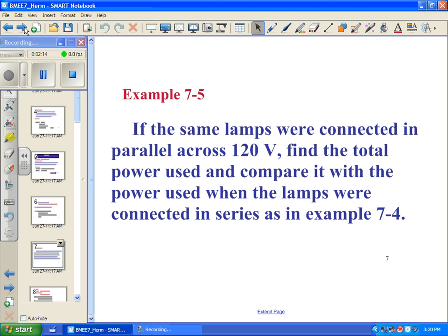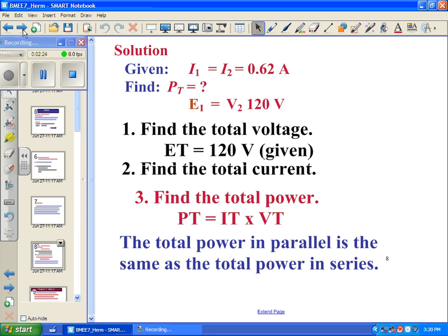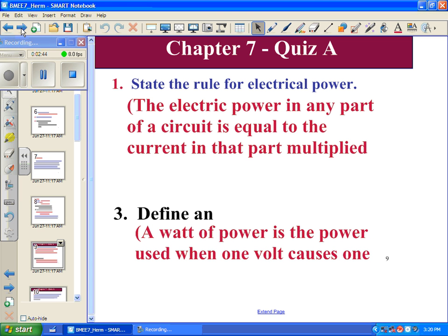The same lamps were connected in parallel across 120 volts. Find the total power used and compare it with the power used when the lamps are connected in series. Let's look at that now. Our voltage is all going to be the same. It's going to be 120 volts. So, our voltage total is equal to 120 volts. Find the total power. Total power in the parallel is the same as the total power in series.